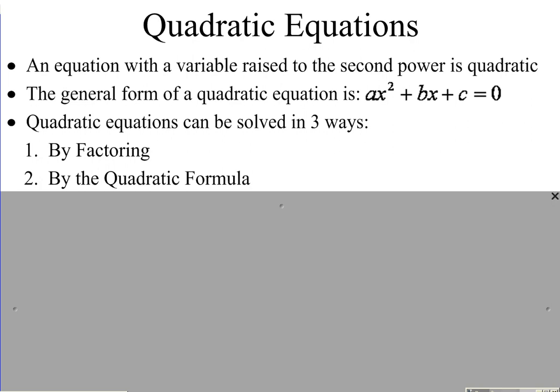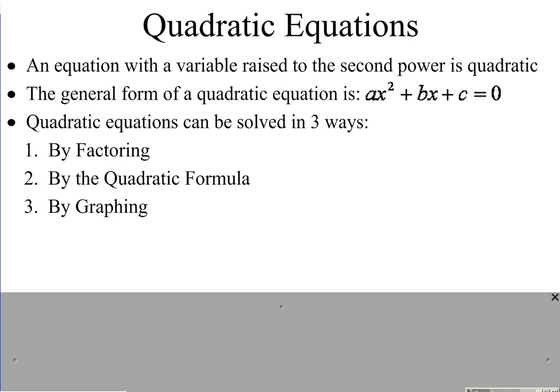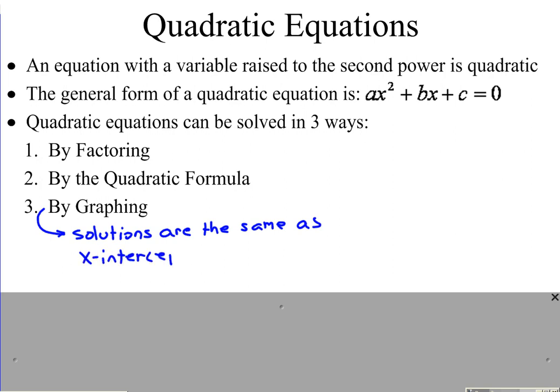If you get really good at using the quadratic formula, methods one and two can take about the same length of time to solve, especially if you're not somebody that's really good at factoring. The third method, which we will not talk much about, is by graphing. What's important to understand is that if you solve a quadratic equation by graphing, the solutions to the equation are the same as the x-intercepts on the graph — see where the x-intercepts are, and those are the solutions.